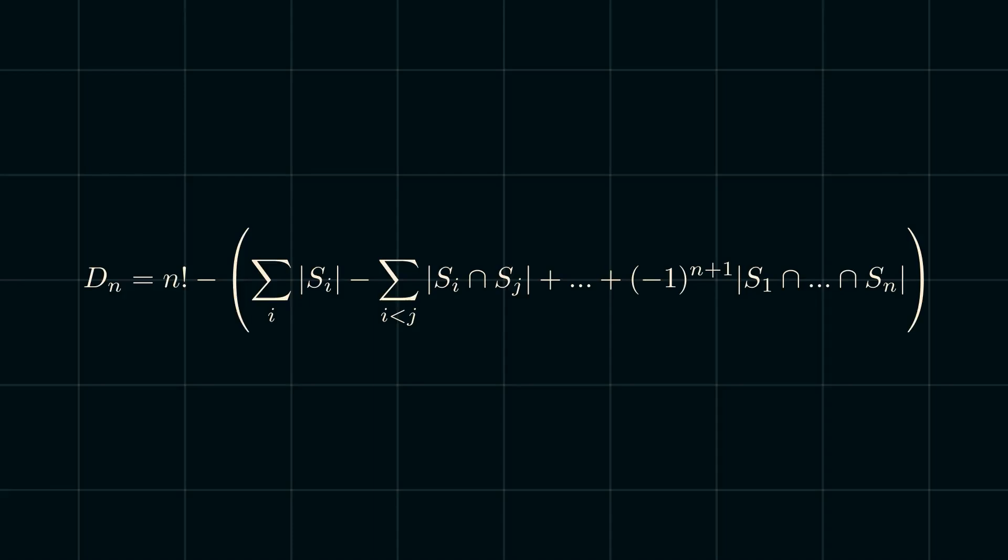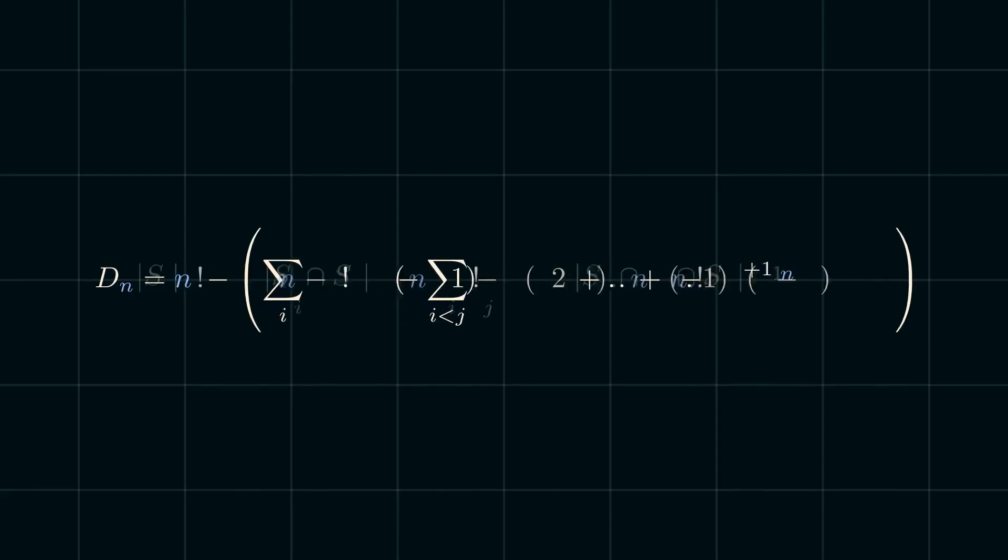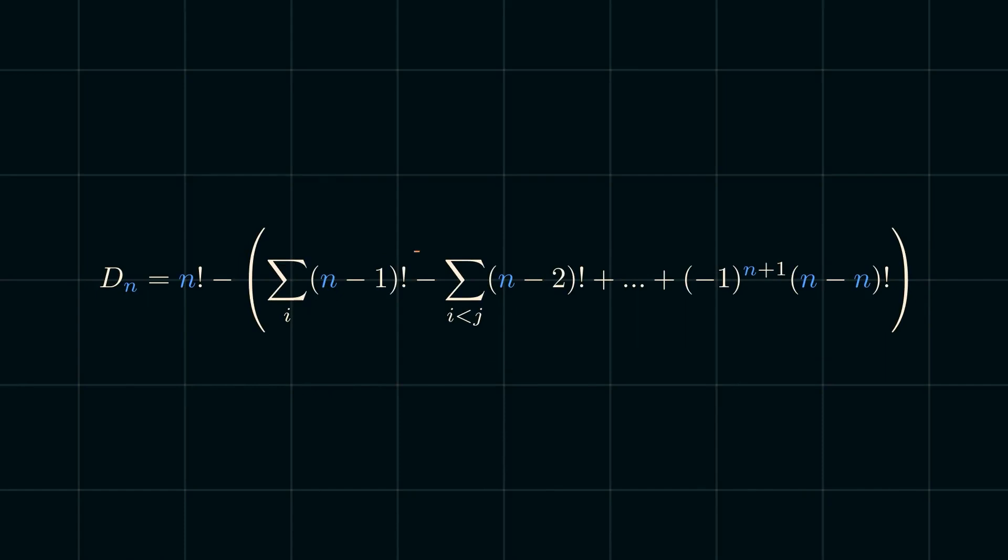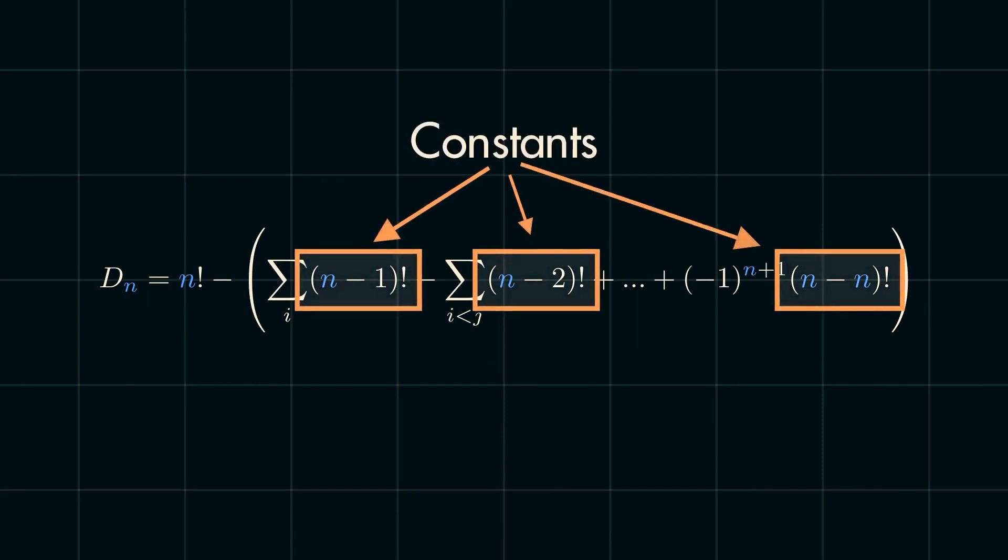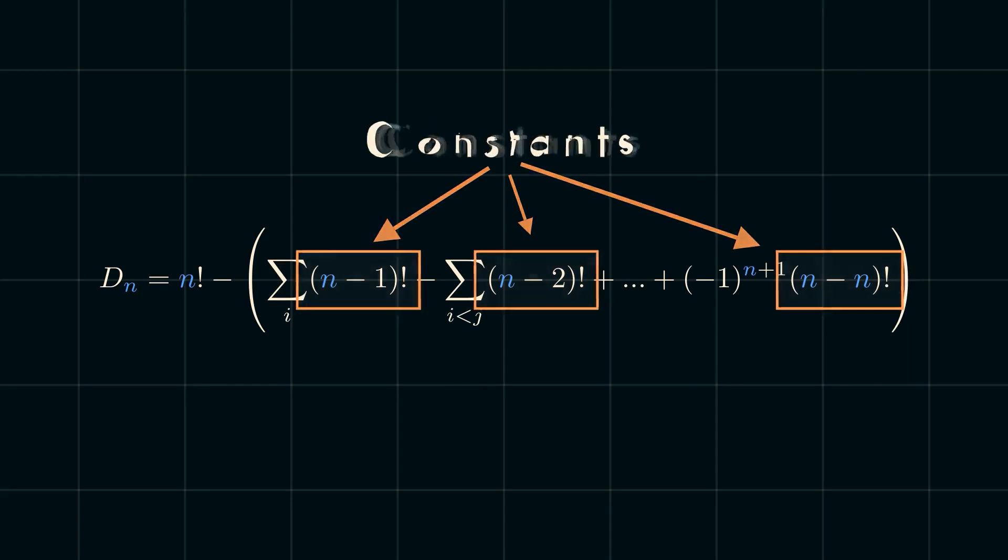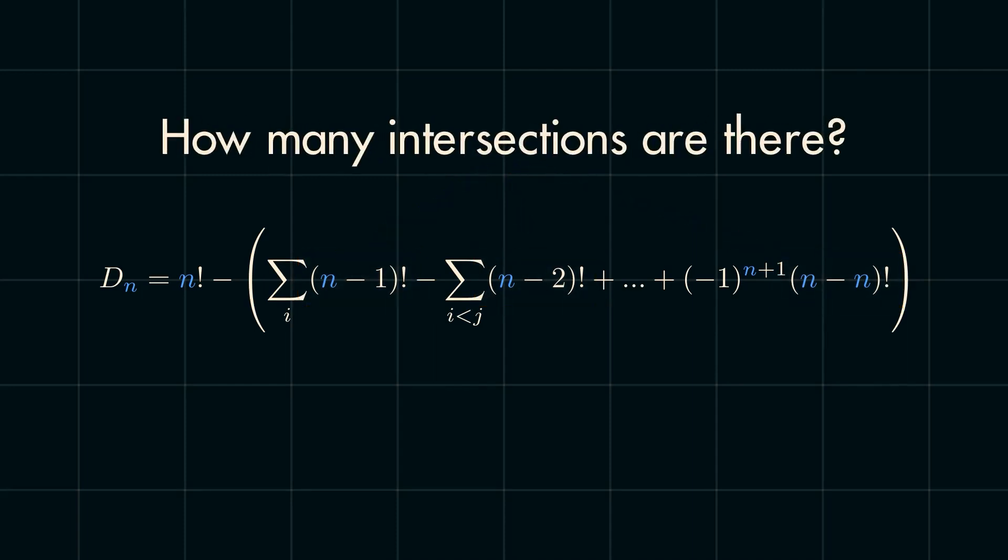First, the intersection between some number of sets will always have the same number of elements inside it, at least as we saw with the intersection of s sub 1 and s sub 4. So, we can replace the remaining parts with the respective factorial. Given that we're just summing up a constant, that means that all these summations can be simplified by just multiplying these factorials by the number of possible intersections between the sets. However, it is not straightforward to figure out the number of pairwise, tripletwise, and so on intersections between the n sets that we have.